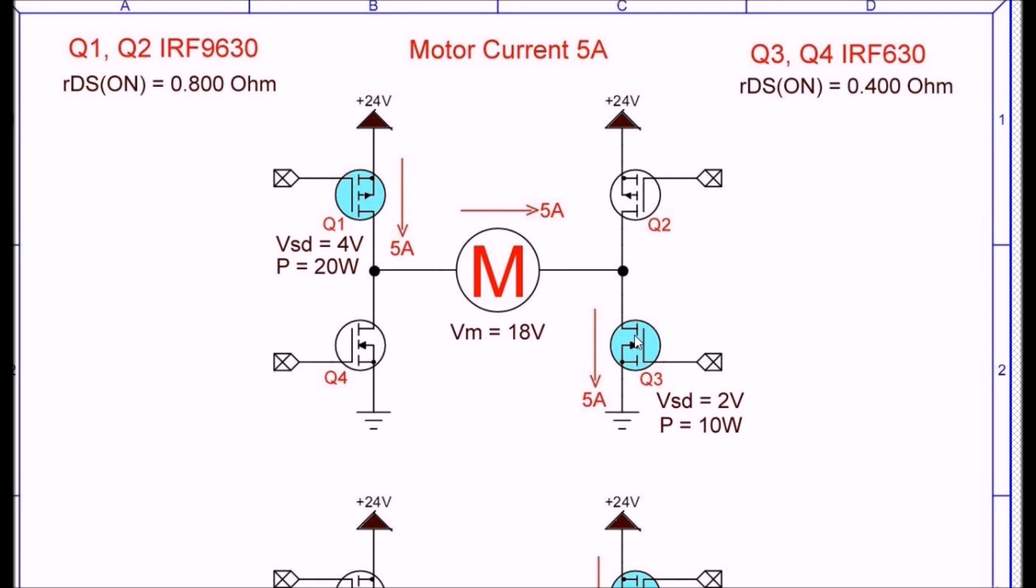Down here at Q3 the N-channel with a 0.4 ohm RDS is going to drop 2 volts. 2 volts times 5 amps is 10 watts. So I've wasted basically, I've used 6 volts and 30 watts of power just on the transistors. That leaves my motor voltage from a 24 volt system at 18 volts, not the best thing in the world, but it works.